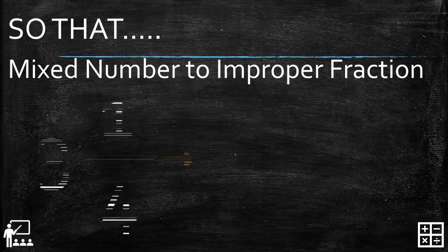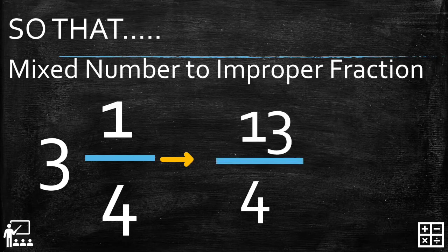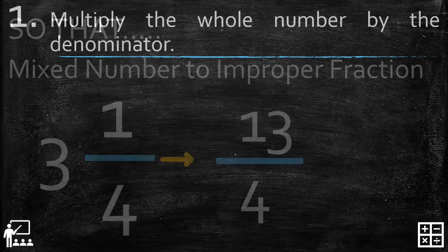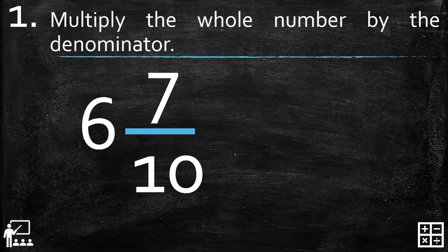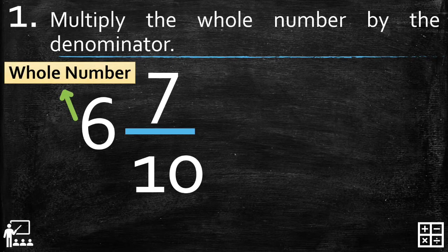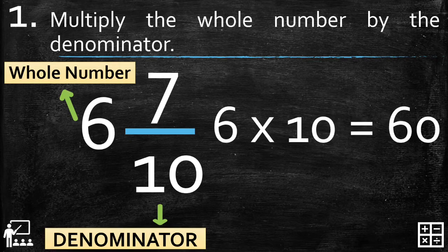So 3 and 1/4 is equivalent to 13/4. Let's try another example. I have here 6 and 7/10. First, we identify the whole number and the denominator. The whole number is 6 and the denominator is 10. We multiply: 6 times 10 gives us 60.